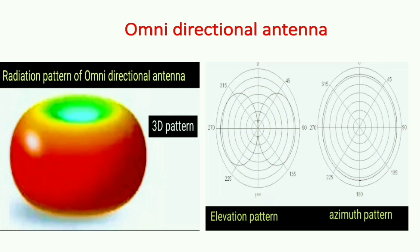An omnidirectional antenna is an antenna which radiates equally across the azimuthal angle but varies with respect to elevation angle, and goes to a minimum at 90 degrees from the azimuthal angle.